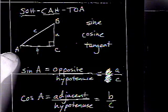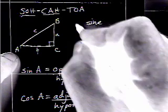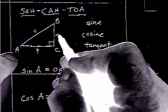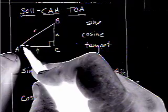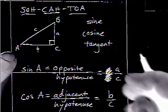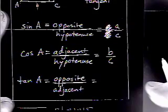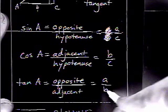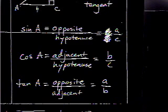The last one is tangent. Tangent is opposite over adjacent. That's going to be A over B. So, that's how you would find tangent.